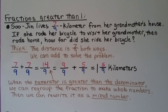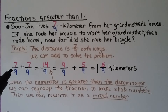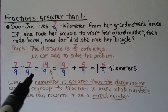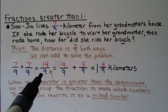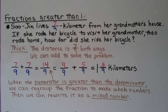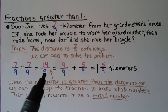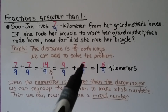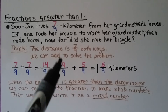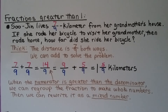Fractions greater than 1. Su Jin lives 7 ninths of a kilometer from her grandmother's house. If she rode her bicycle to visit her grandmother and then rode home, how far did she ride? The distance is 7 ninths both ways, so we add 7 ninths plus 7 ninths. They have the same denominator, so we just add the numerators to get 14 ninths. When the numerator is greater than the denominator, we can regroup: 14 ninths equals 9 ninths plus 5 ninths, and 9 ninths is one whole. So Su Jin rode 1 and 5 ninths kilometers.